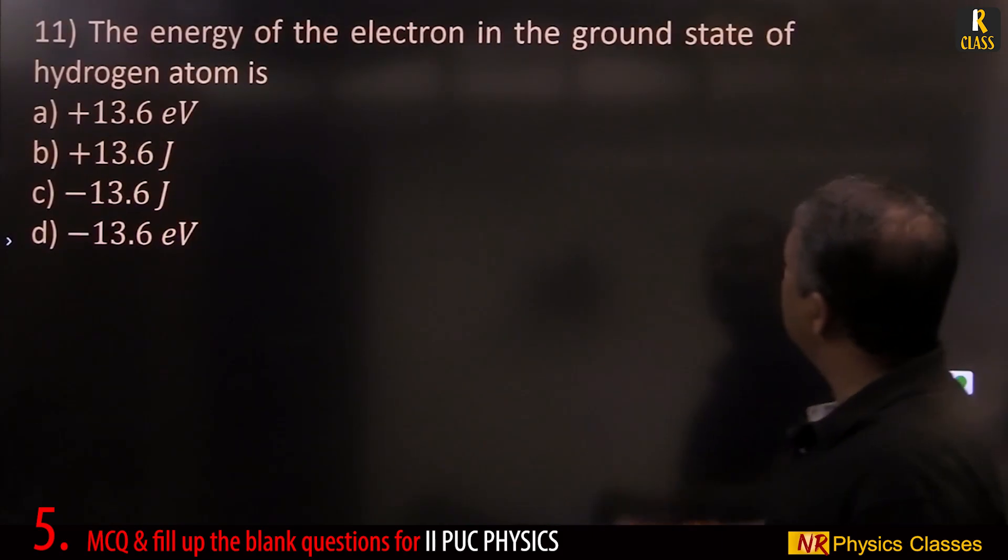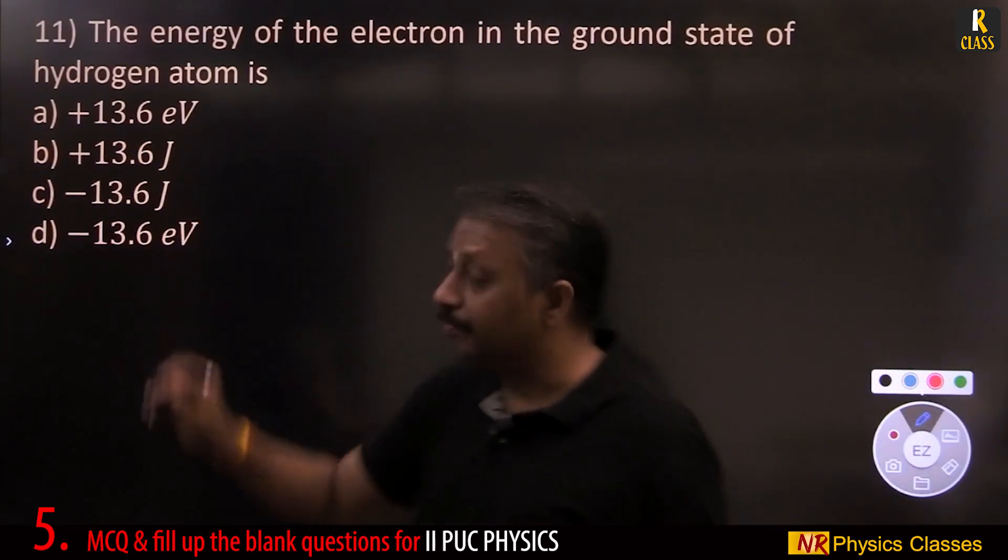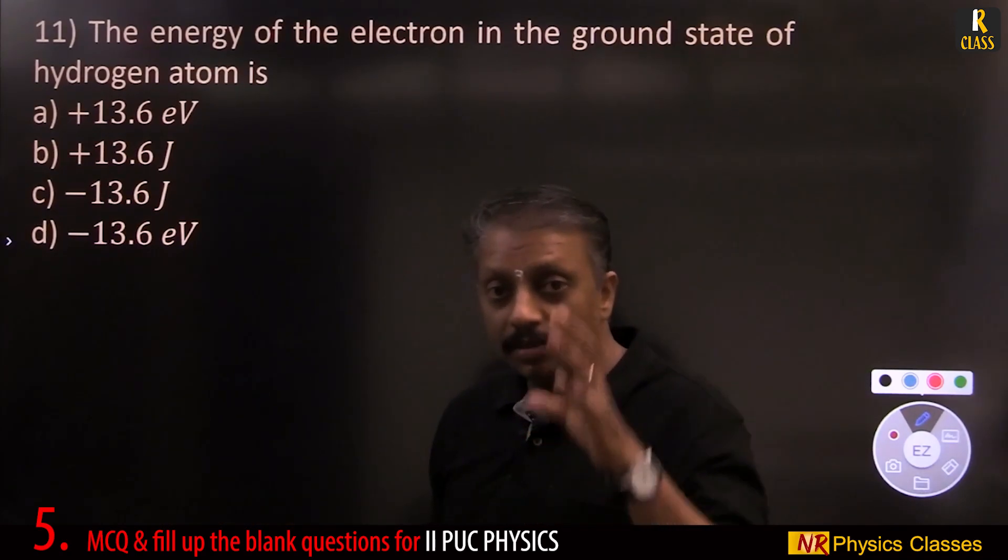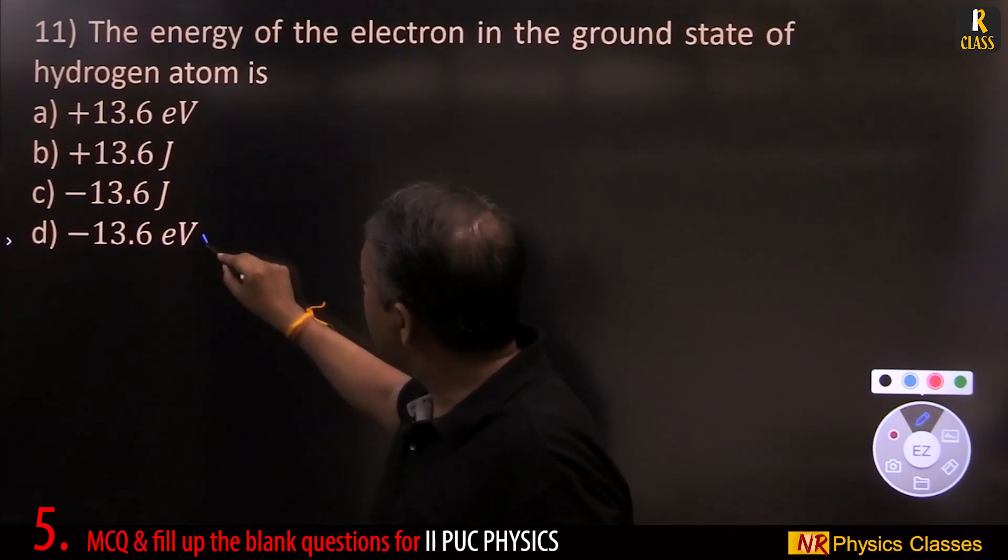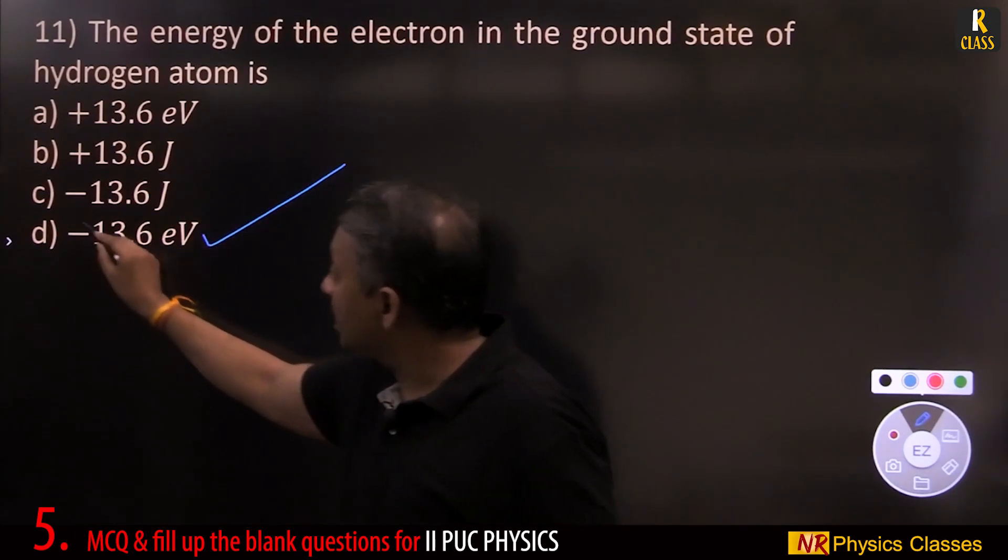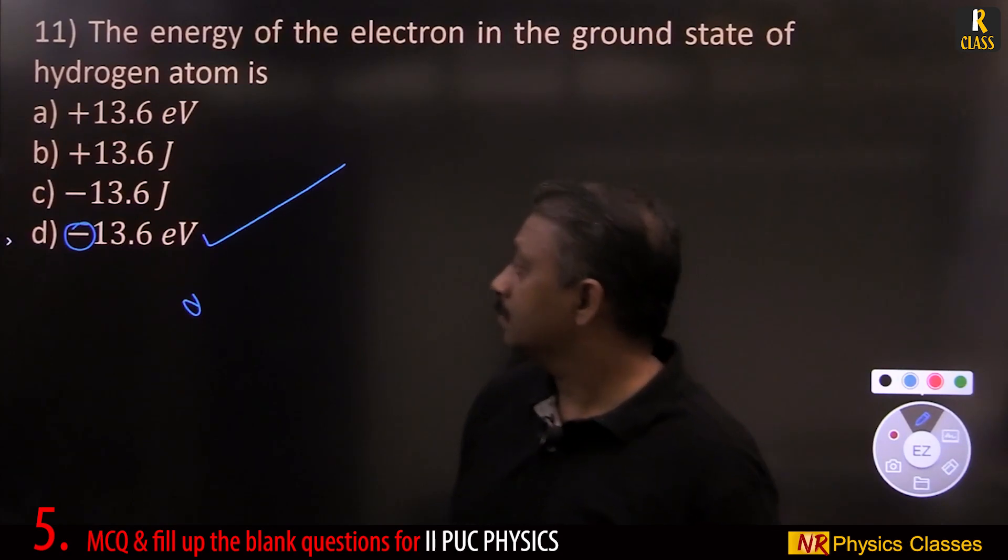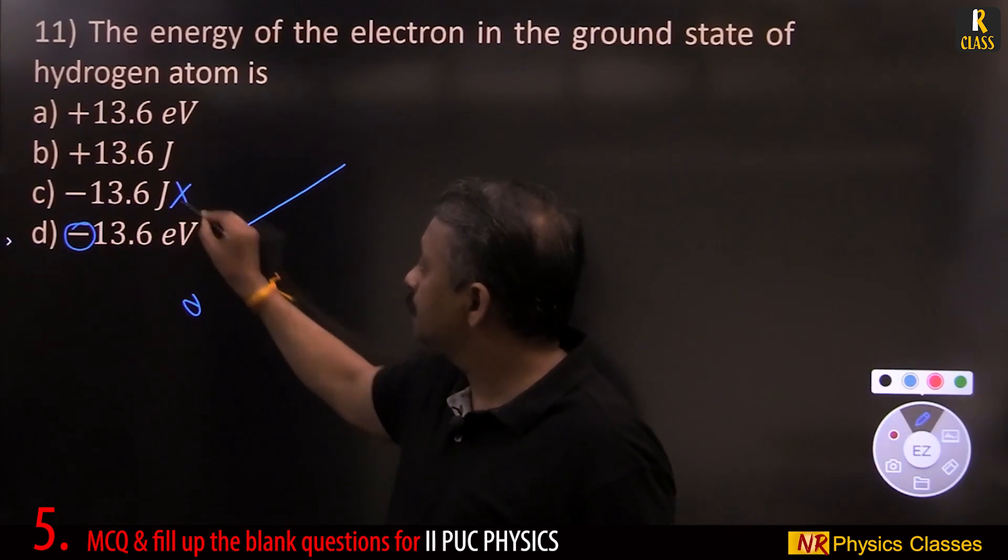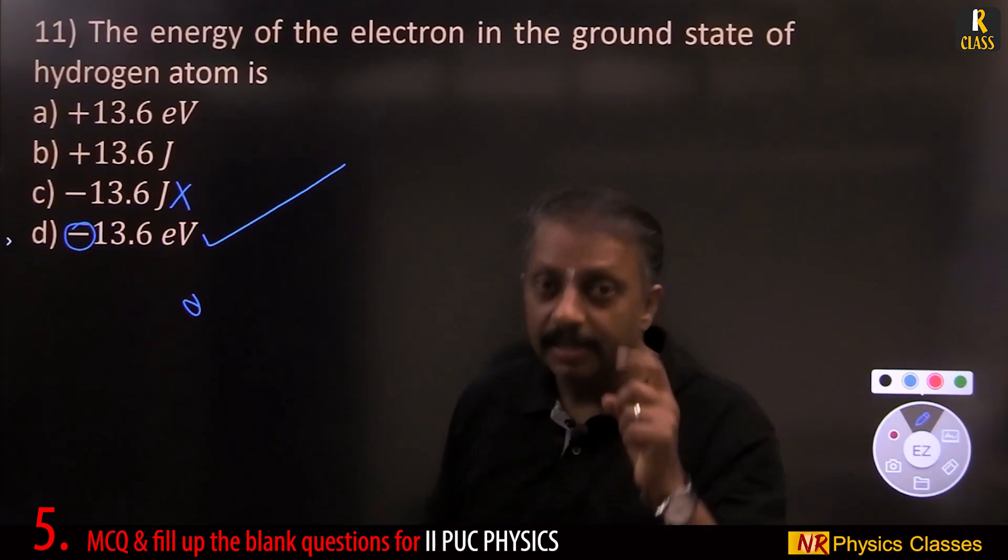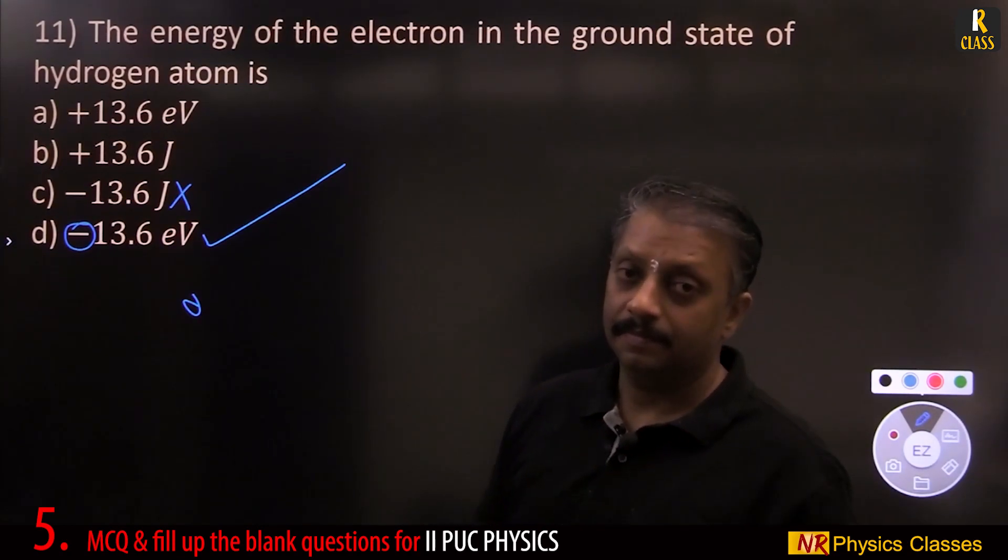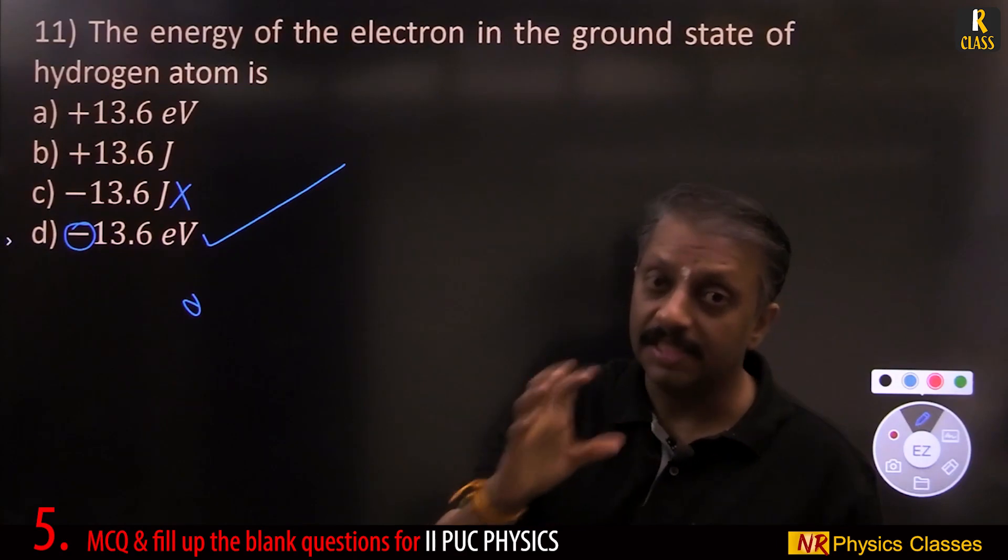The energy of electron in the ground state of hydrogen atom is minus 13.6 eV with negative sign. Since electron is held, it should be with negative sign. Bound state. Electron is in bound state.